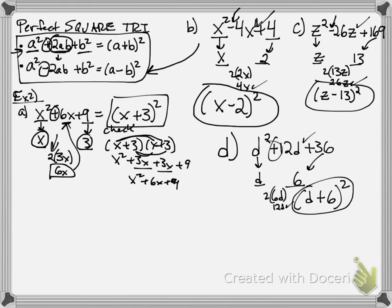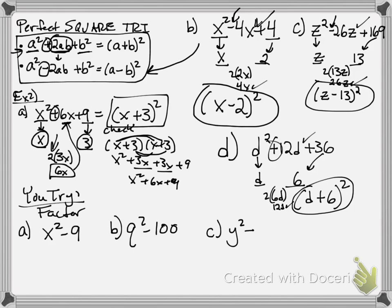What I'd like you to try, I have a few of them. So, you try. I want you to factor each. For a, give a try to factoring x squared minus 9. B, q squared minus 100. C, y squared plus 16y plus 64. And then lastly, try w squared minus 18w plus 81. Thanks for watching, guys. Good luck. We'll talk about it more tomorrow.